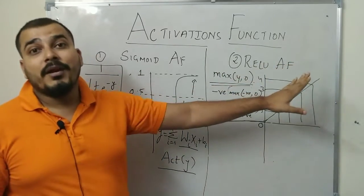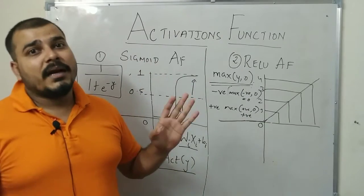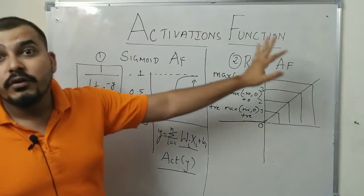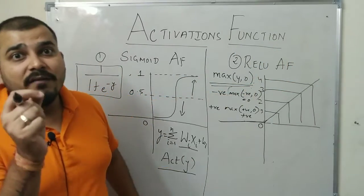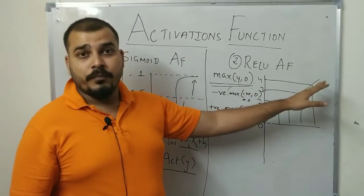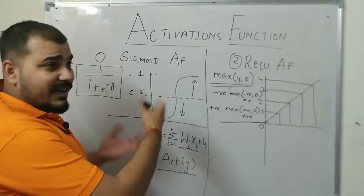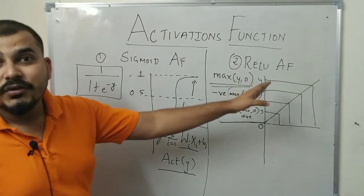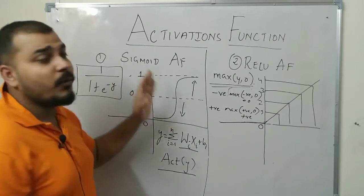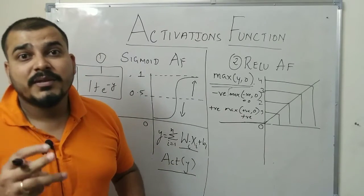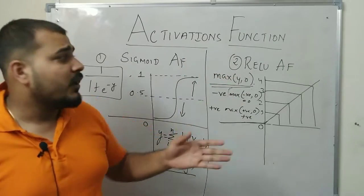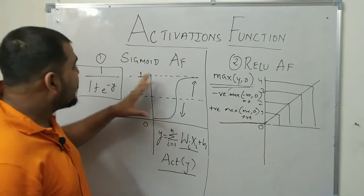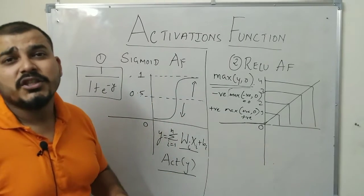ReLU is much more popular than Sigmoid. Whenever you are solving a regression problem statement, most people try to use ReLU — whether in the hidden layers or in the output layers. But if you are solving a classification problem, in the middle layers you can use ReLU, but on the final output layer you should always use Sigmoid, because Sigmoid transforms the value between 0 to 1, which is basically used for the classification problem statement.